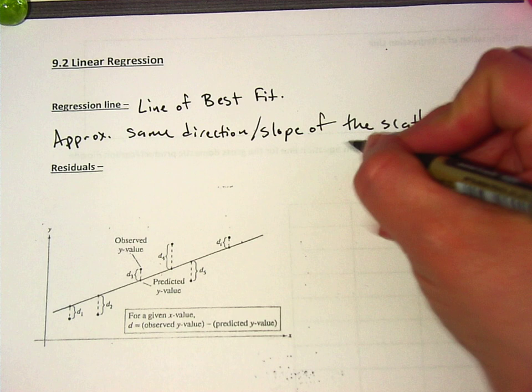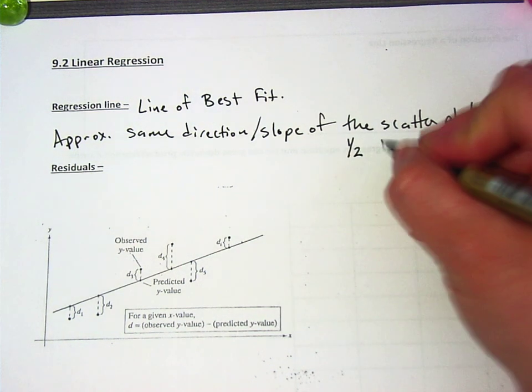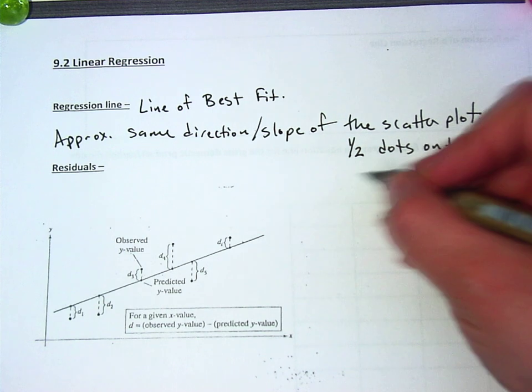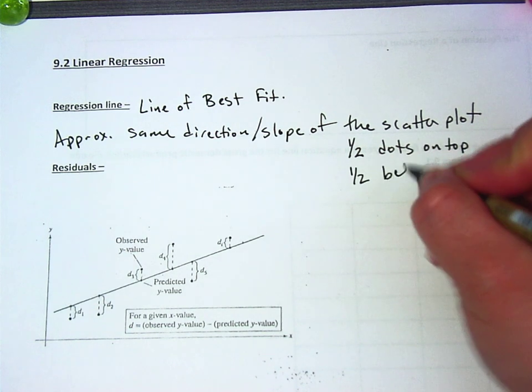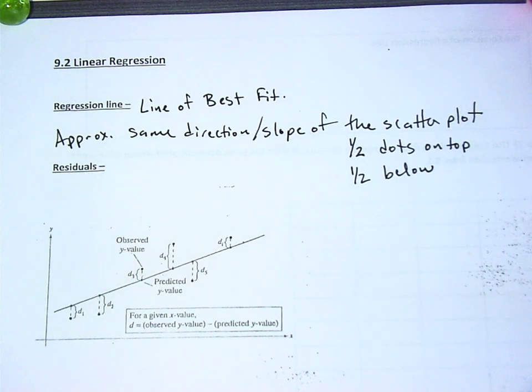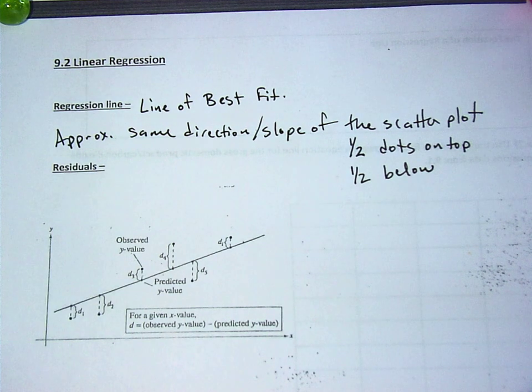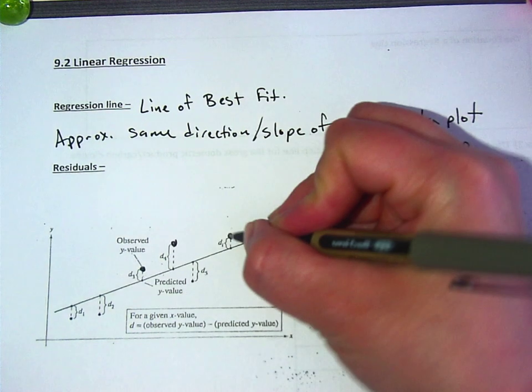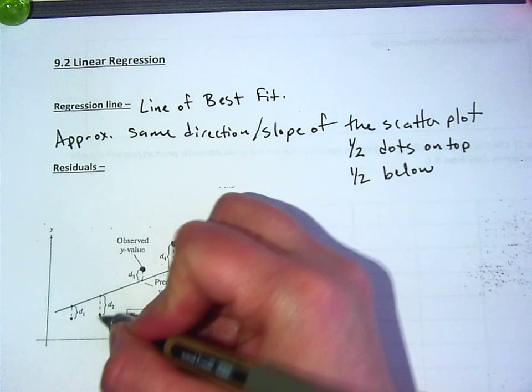It should have about half of the dots on top of the line and half below. Do you see how these are the dots here? Here's one. Here's three dots. There's a dot. Here's a dot.